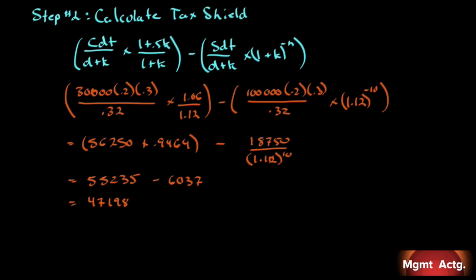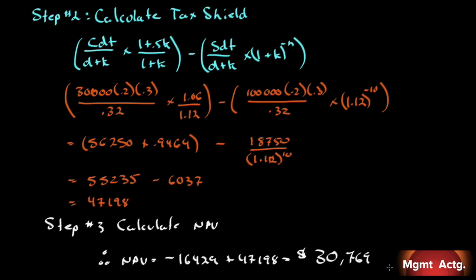We know our net present value of our tax adjusted cash flow from step one. We know the present value of our tax shield from step two. What is left? Step three: calculate our net present value. Our net present value of our tax adjusted cash flows was negative $16,429, but to that we add the fact that all that depreciation will save us taxes, and the net present value of all that savings is $47,198, which equals $30,769.